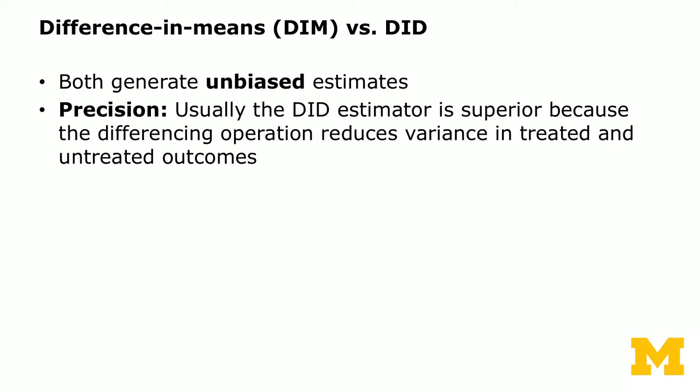How does DiD compare with the difference in means estimator, which we also call DIM? We just showed that both generate unbiased estimates, so on that dimension they're comparable. How about precision? The reason we like the difference-in-differences estimator is because it reduces the variance in the treated and untreated outcomes — it's more precise. They're both unbiased, but diff-in-diff is more precise than the difference in means estimator.